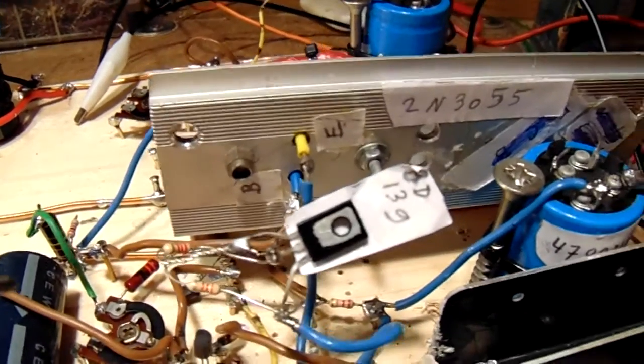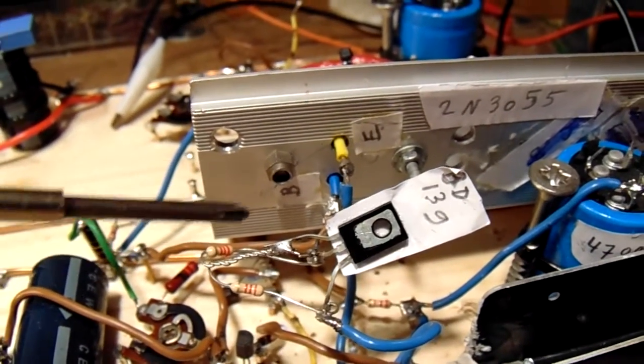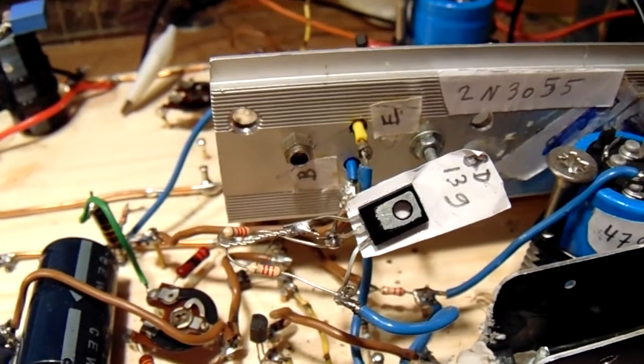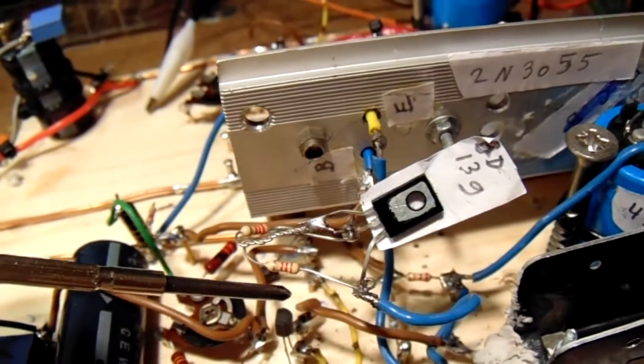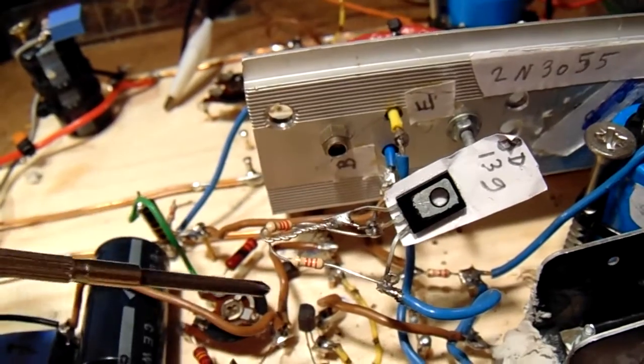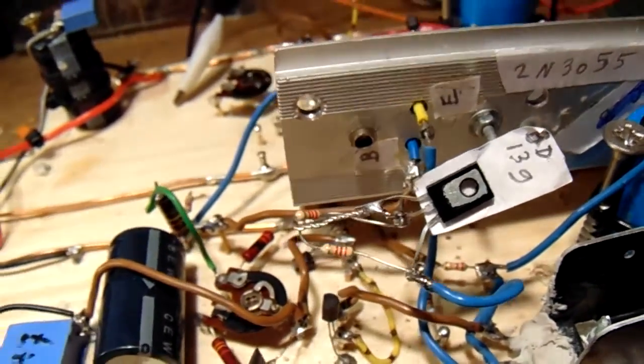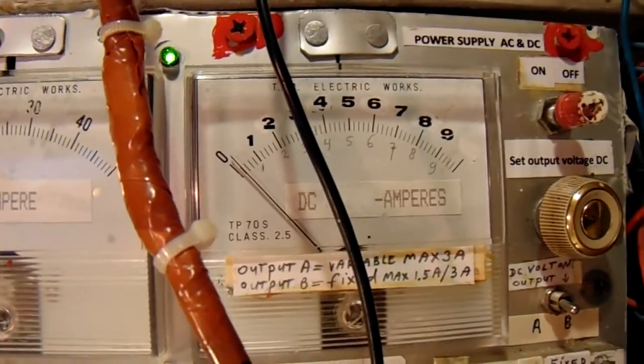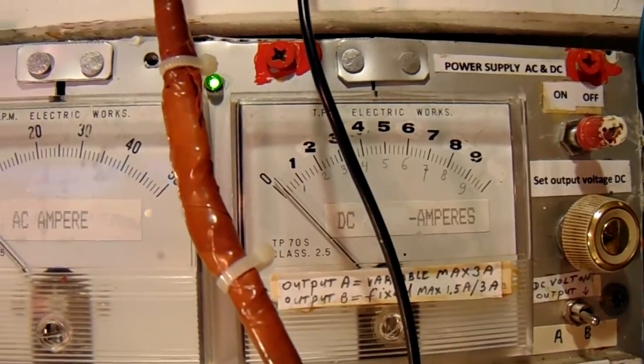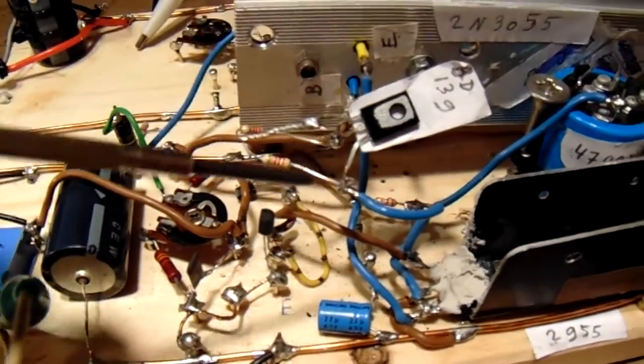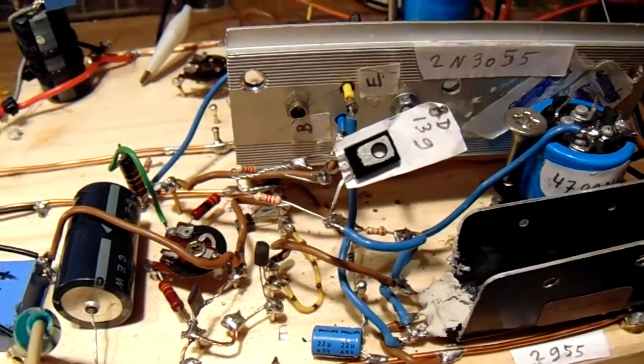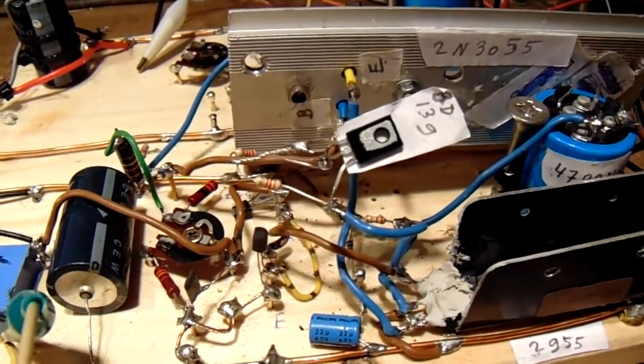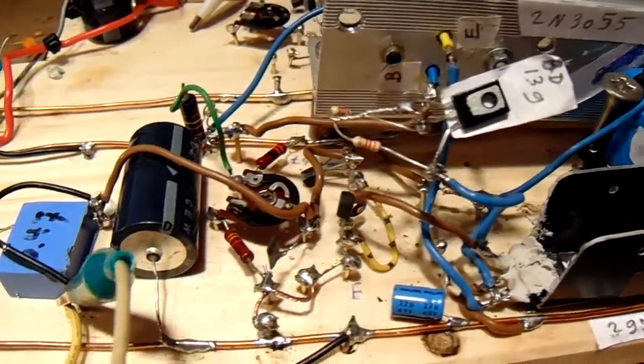Instead of the 4k7 potentiometer at the BD139 from the end amplifier, I've mounted here now two fixed value resistors from 2k2. It gives much more stability. It means that the amplifier takes a quite amount of current, say 200 milliampere quiescent current. But anyway, this is the best position to keep the amplifier in a good mode.